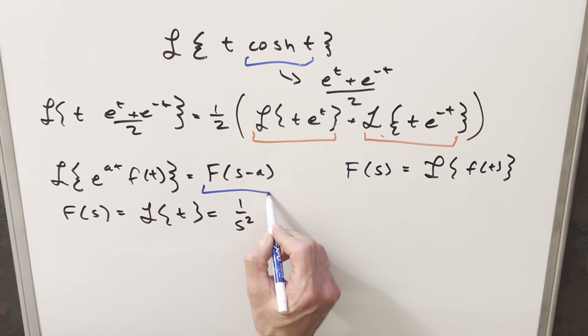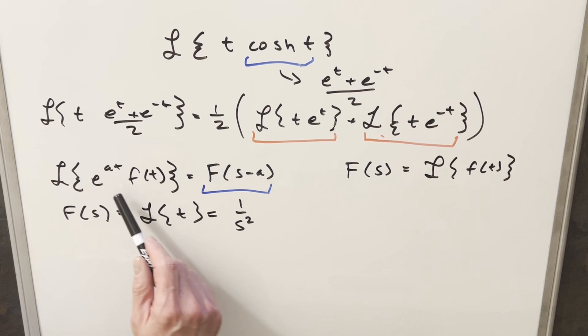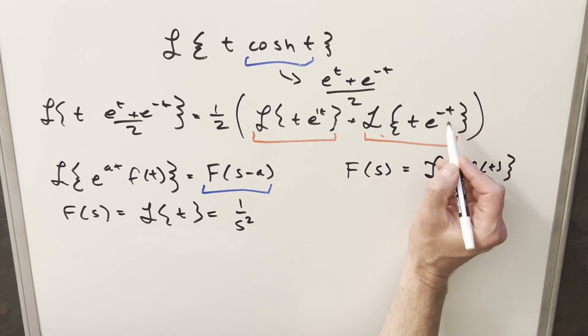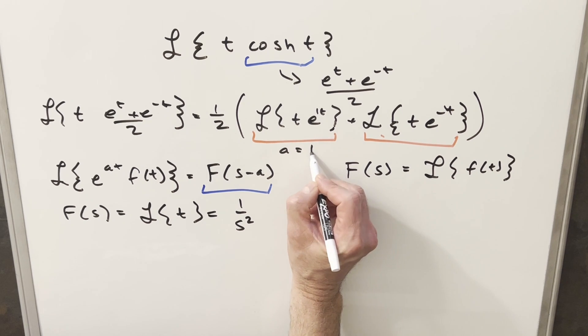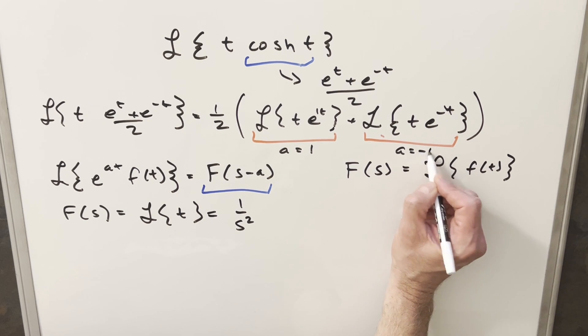Now we can use this formula on both of these. We just need our a value. The a is just the coefficient on the t. We can look at this as one t and this as minus one t. So here our a value is just going to be one and here our a value is going to be minus one.